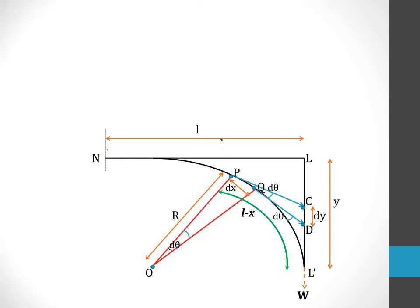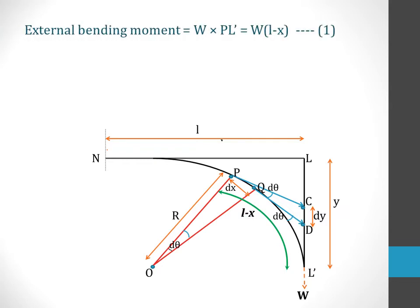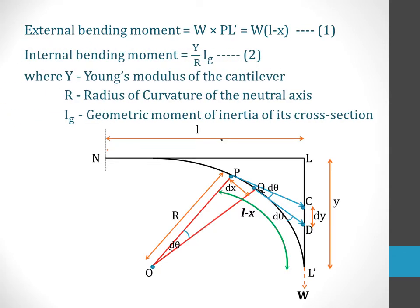From the figure, we can find the expression for the external bending moment. Bending moment is a product of the force into the perpendicular distance. For our case, the external bending moment is a product of the tensile force given by the load into the perpendicular distance L minus X. Therefore, the external bending moment is given by W(L − X), represented as equation 1. The internal bending moment, on the other hand, is given by YIG/R — with Y the Young's modulus of the cantilever, R the radius of curvature of the neutral axis, and IG the geometric moment of inertia of its cross-section.